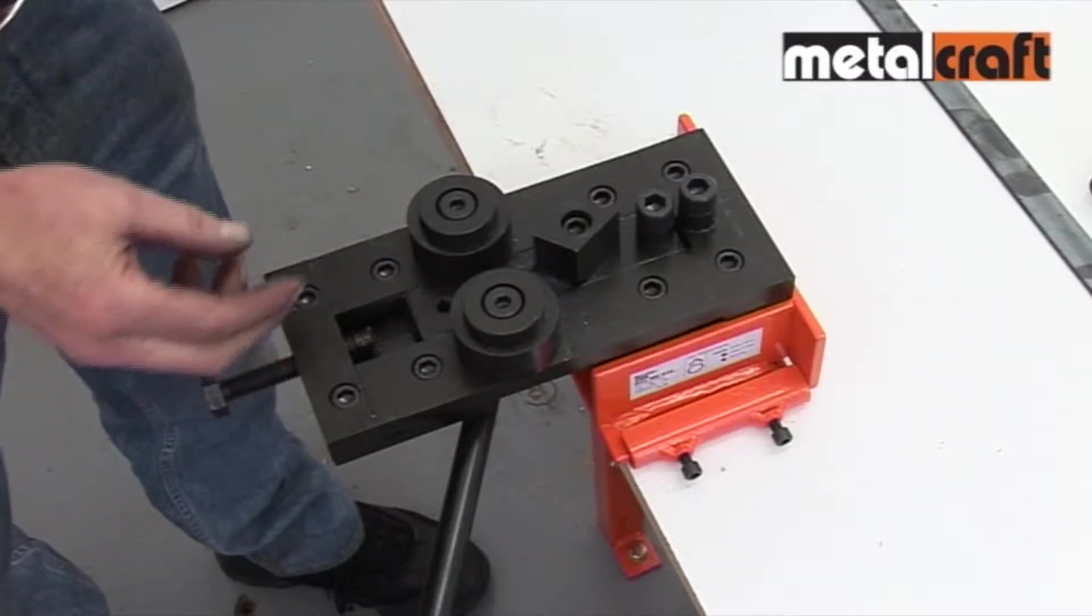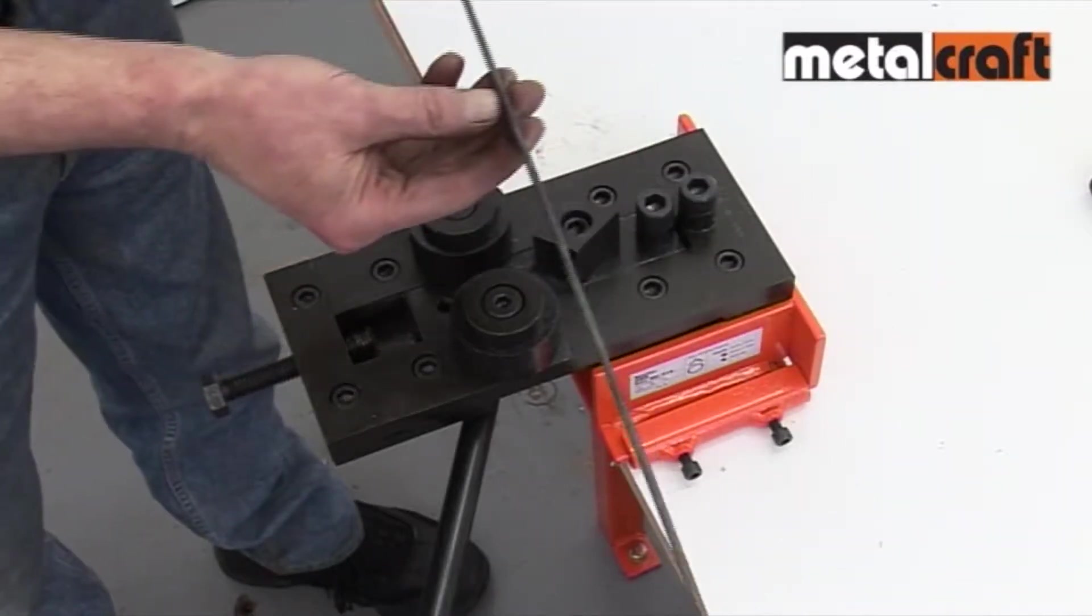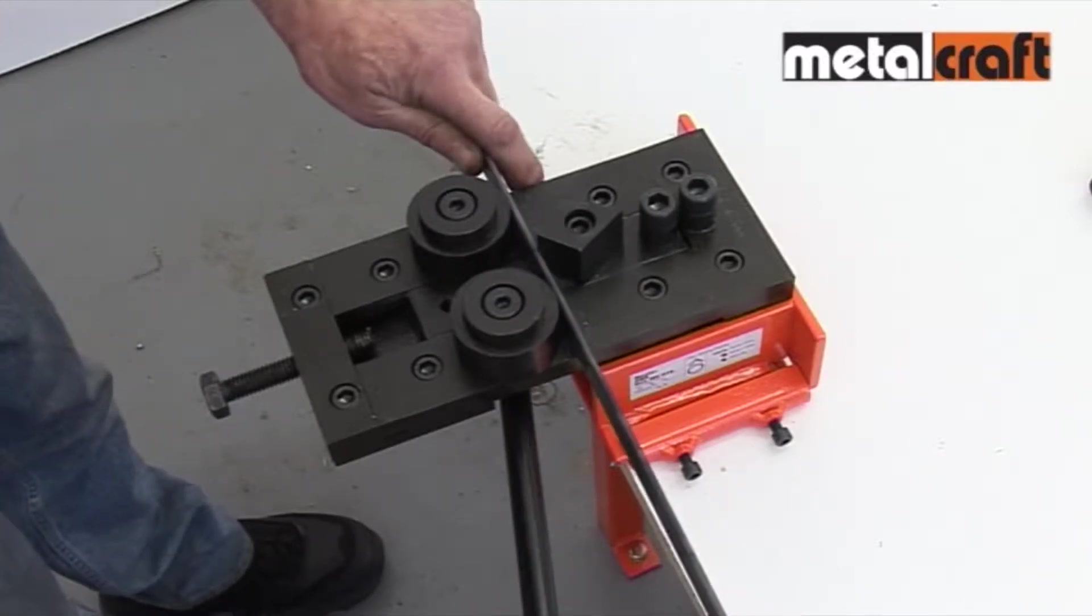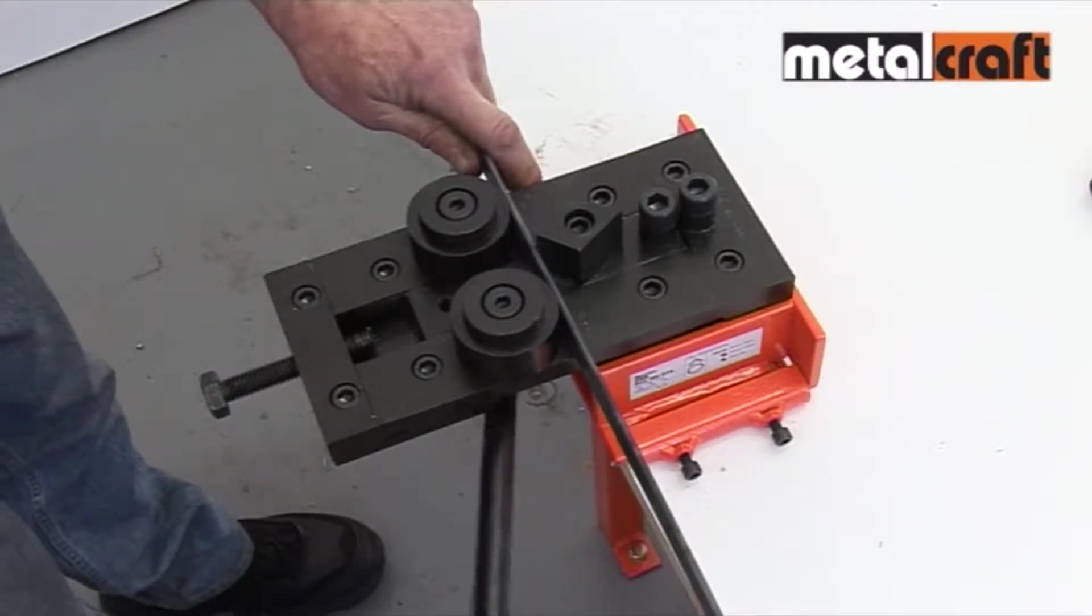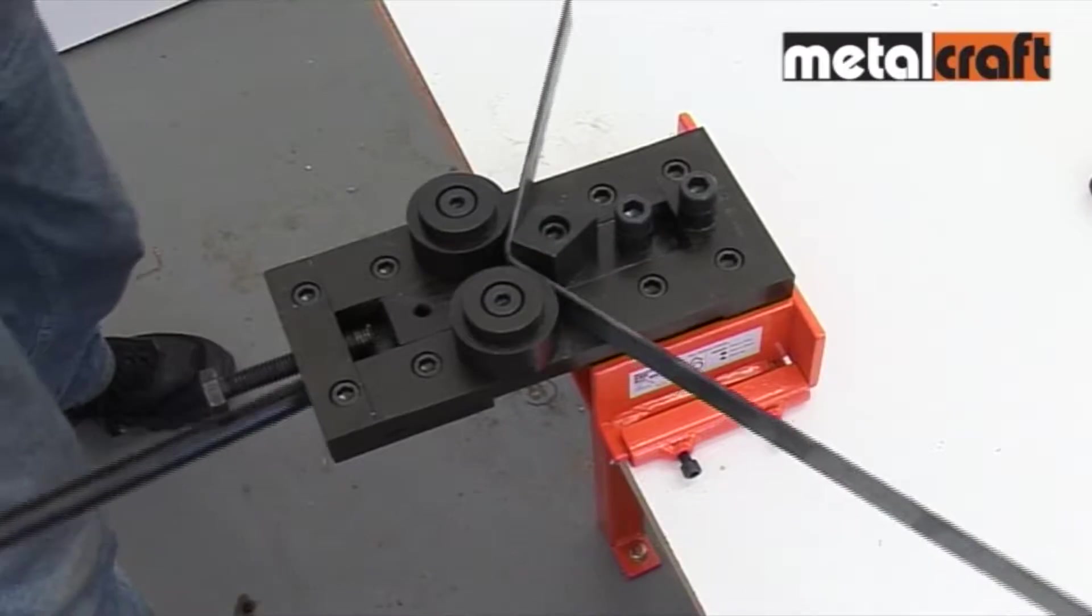Here, we are using 20mm by 3mm bar to make a frame. Simply place the bar in the gap between the side rollers and bending head. Then pull the lever to achieve your required bend.